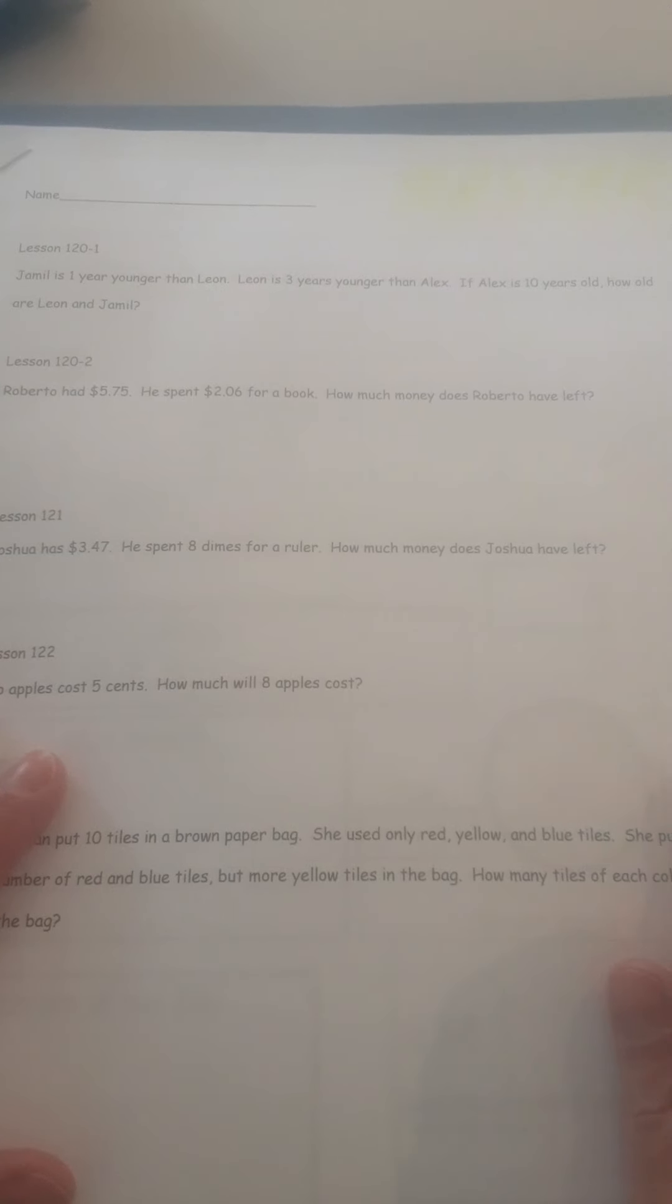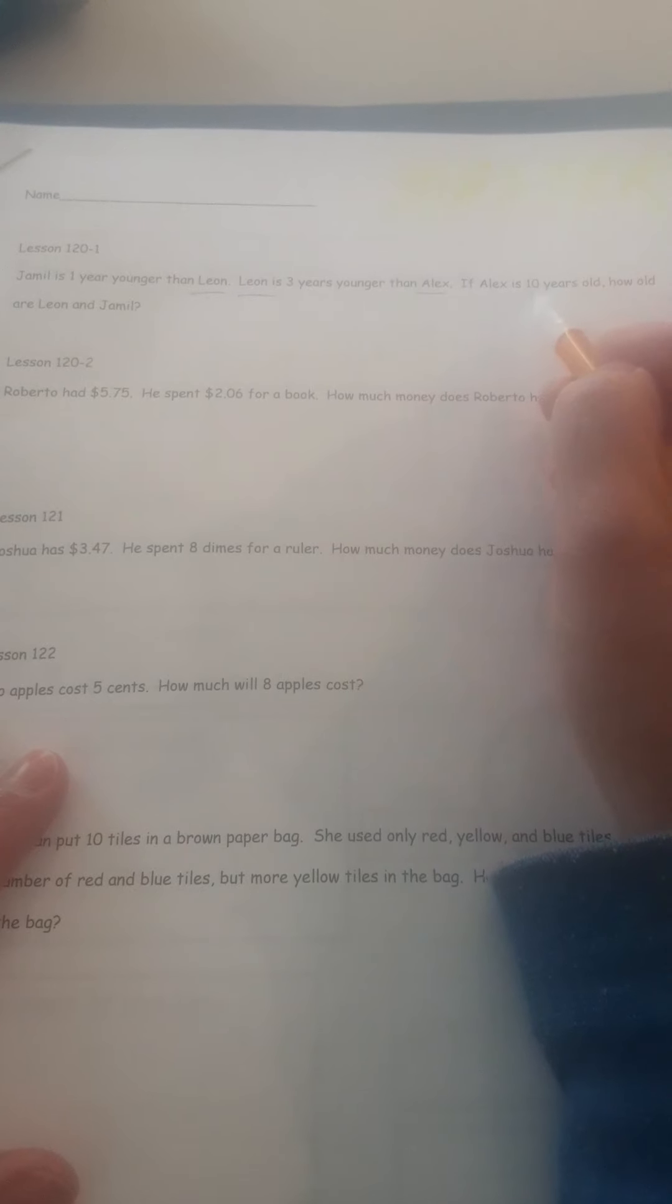Hey boys and girls, this is Math Meeting 121-1. Here is your word problem. Jamil is one year younger than Leon. Leon is three years younger than Alex. If Alex is ten years old, how old are Leon and Jamil?